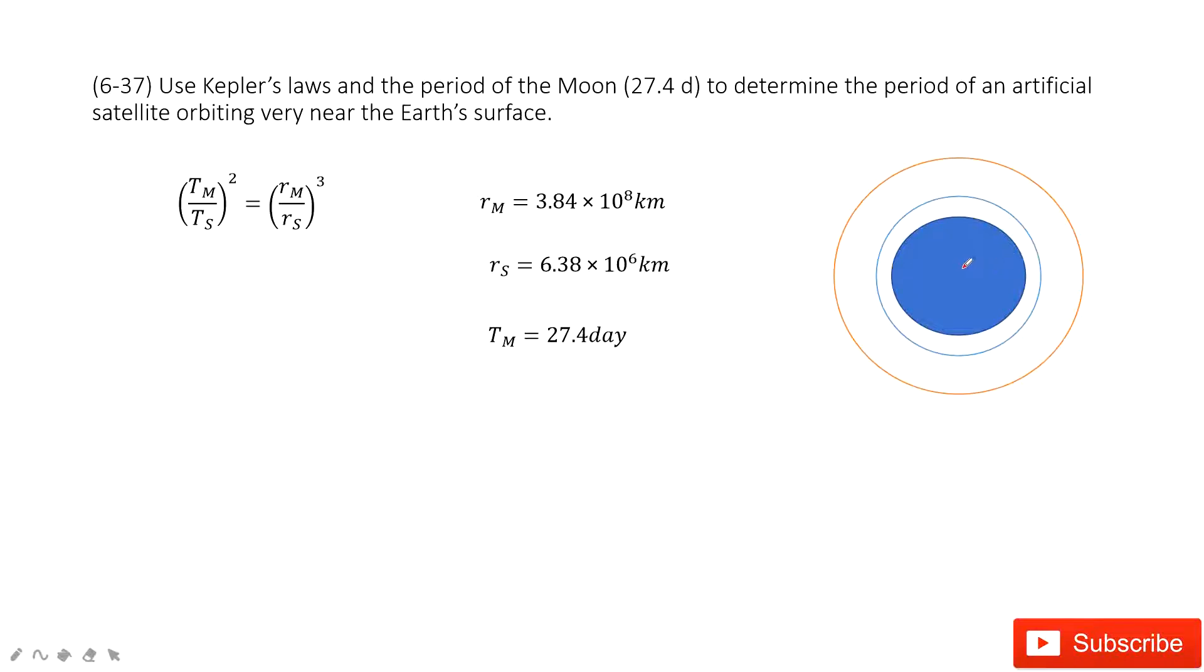So for this one, we consider Kepler's law. For Kepler's law, it tells us the period ratio squared equals the radius ratio cubed.